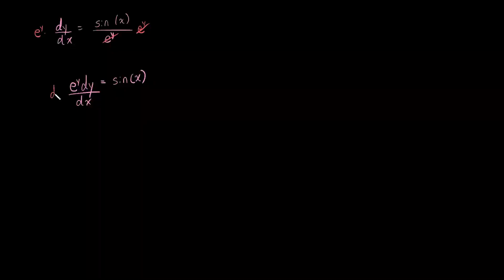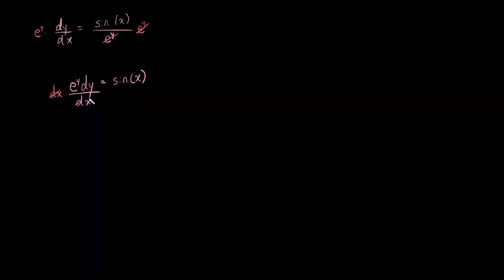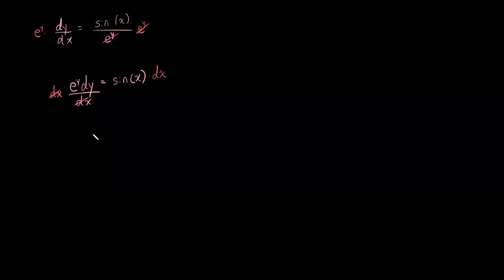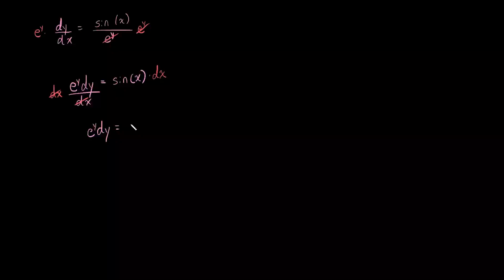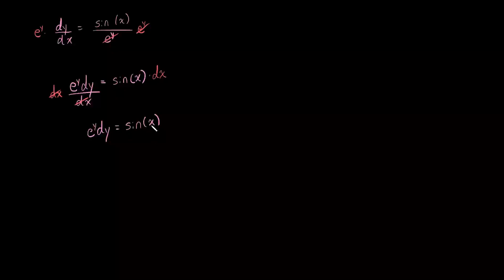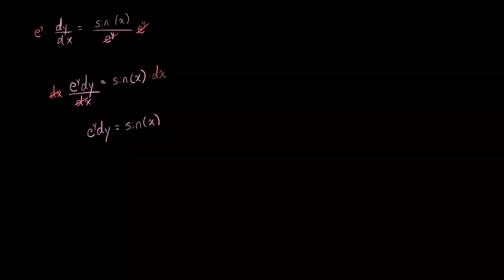So we'll go ahead and multiply both sides by dx. Separation of variables is nice because it feels more like a puzzle that just needs to be put together. From here, we have our two variables separated — all our y's on one side and, my bad, all our x's on the other.